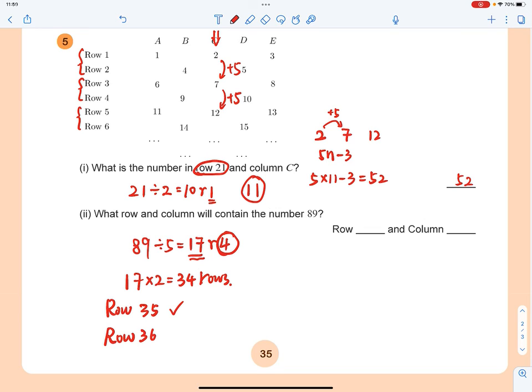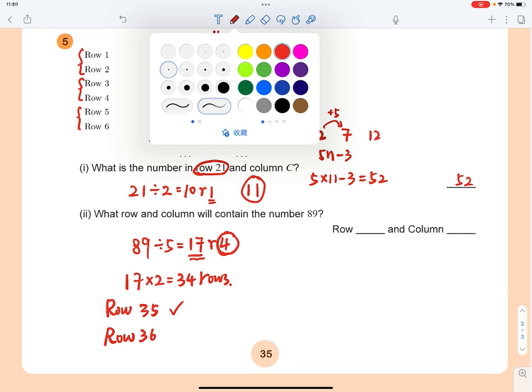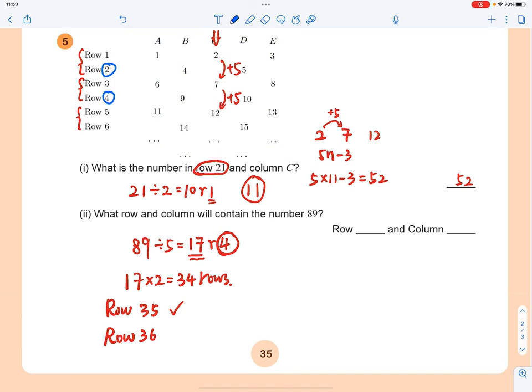So row 36. For any even number row—row 2, 4, 6—the first number will be in column B. So the number 89 will be in row 36 and column B. Thank you.